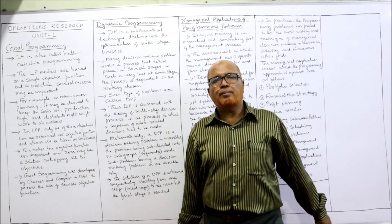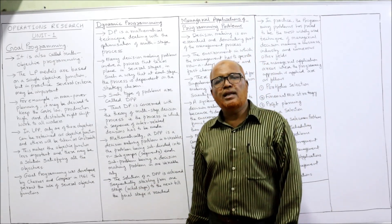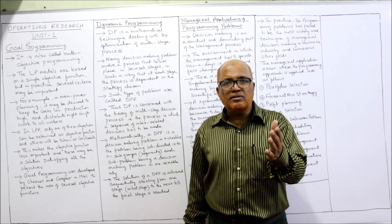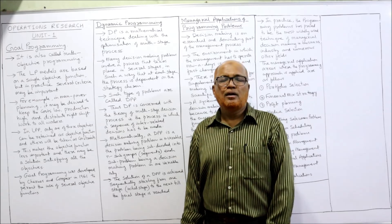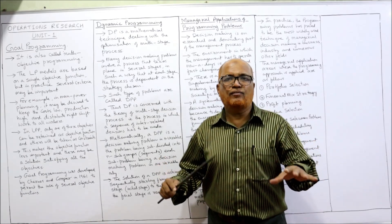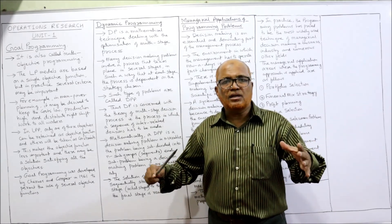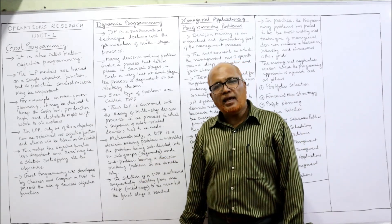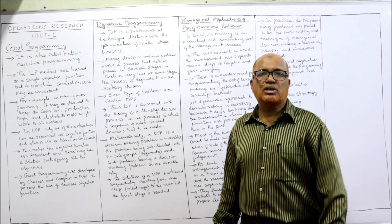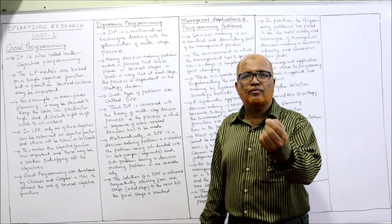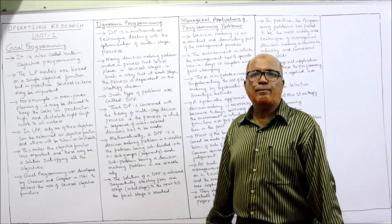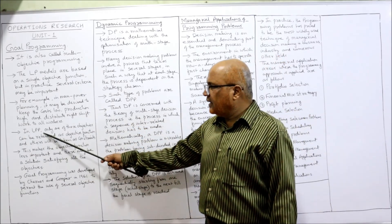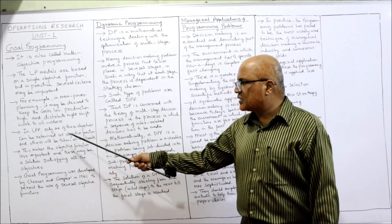For example, in manpower planning, a problem involves multiple objectives. The management wants labour at a lower cost, wants high productivity of labour, and also wants to decide how workers' duties will be divided for night shift work. Like that, we have multiple objectives for a single problem related to labour. This is an example where we need goal programming.